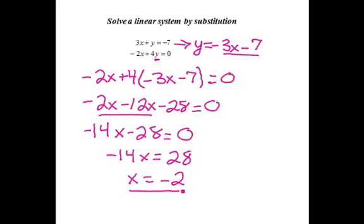Now the solution to my system is an ordered pair, so I have to evaluate y. So if I take x equals negative 2 and I plug it into my original equation that I solved for y, I get y equals negative 3 times negative 2 minus 7.